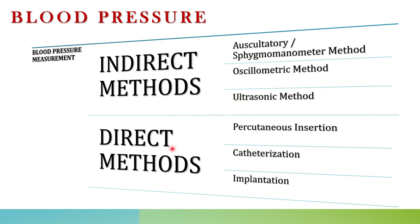In this class we are going to see the direct blood pressure measurement methods. The methods include: percutaneous insertion, catheterization, and implantation of a transducer in blood vessels. We are going to discuss these three direct methods of blood pressure today.